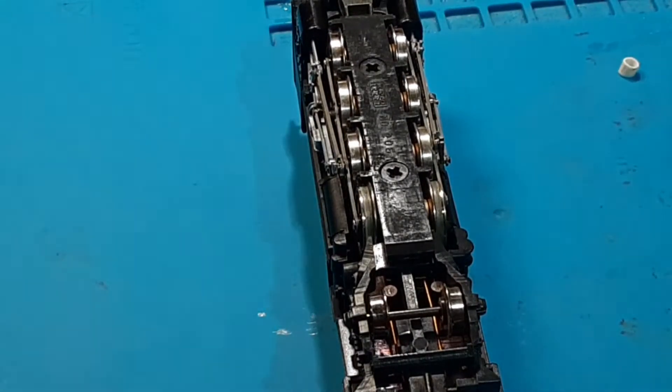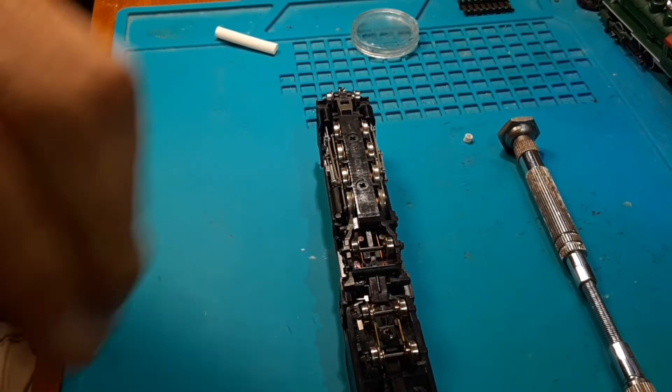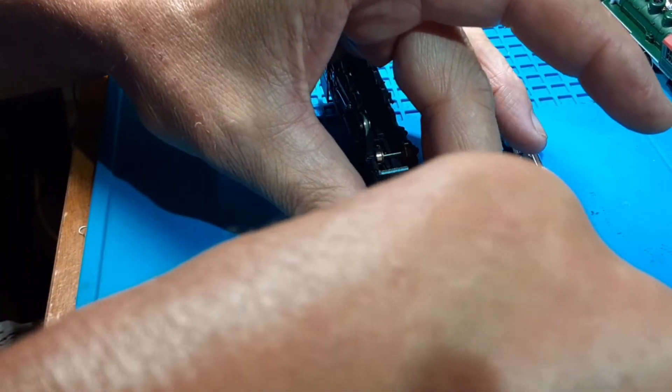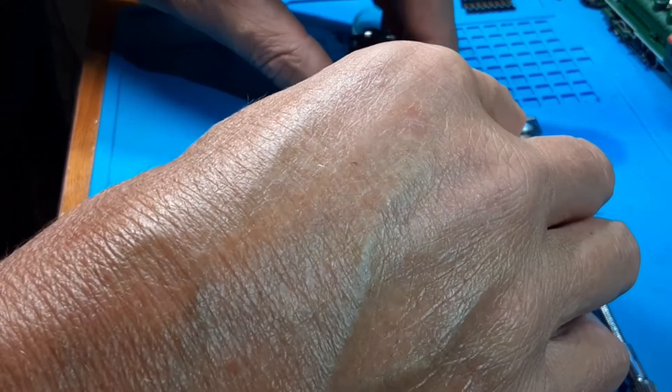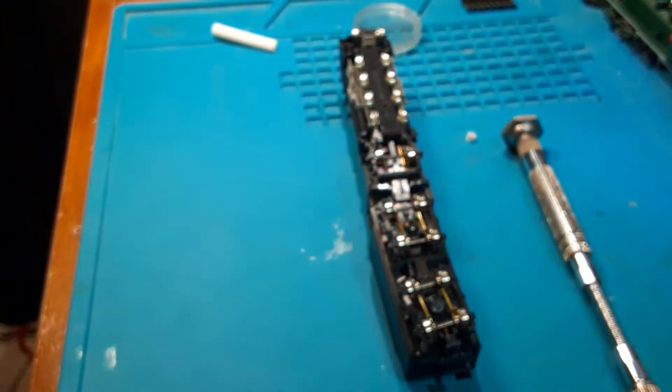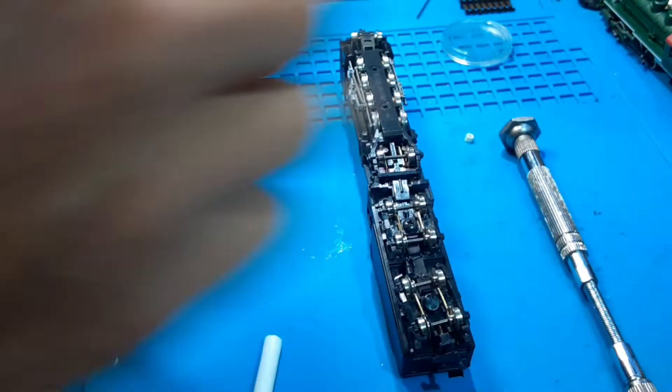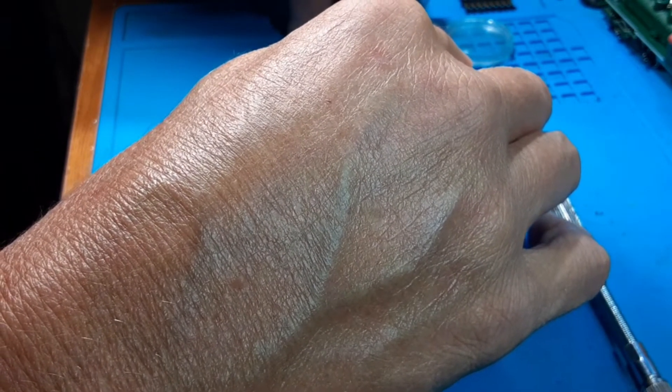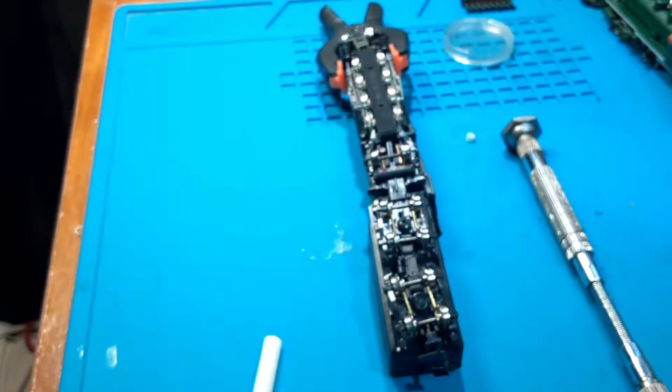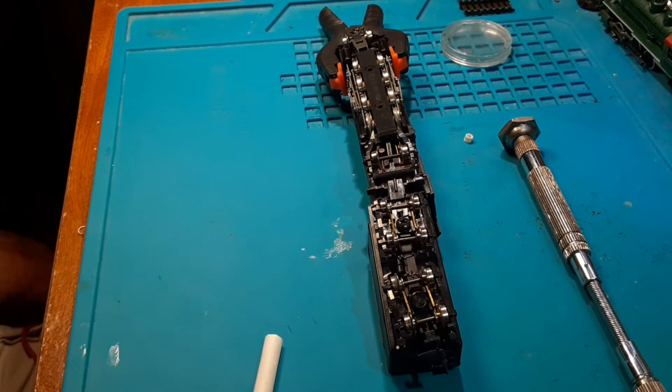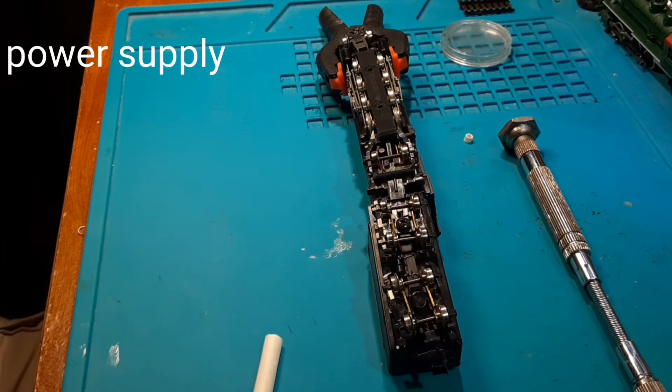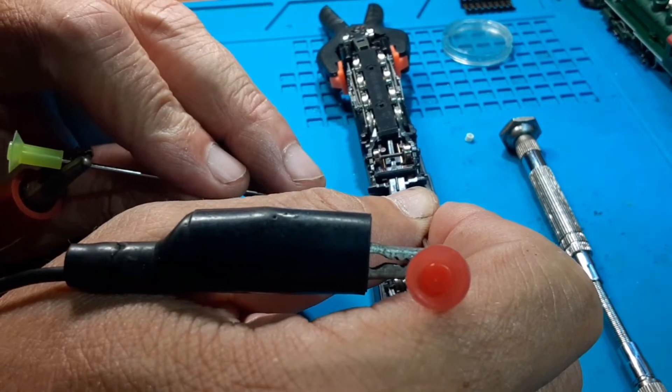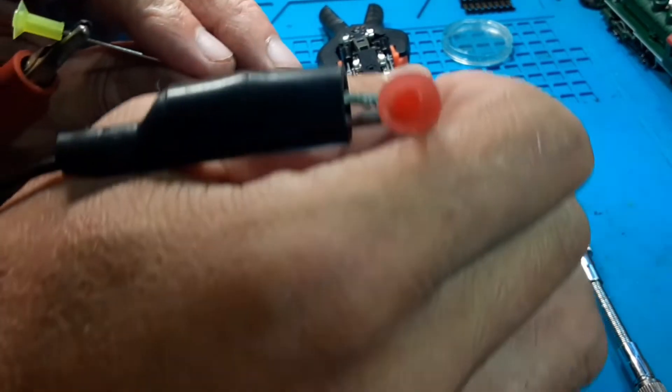Alright, now we're going to clamp the tender just to add a little stability so it doesn't flop over. Maybe we need to clamp the front. Maybe it'll be okay. Alright, I have my voltmeter on 4.2 volts and let's go ahead. Let's start back here.